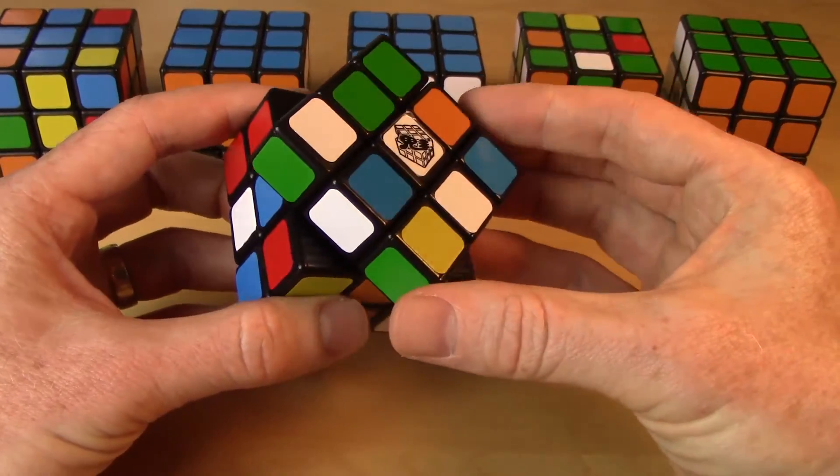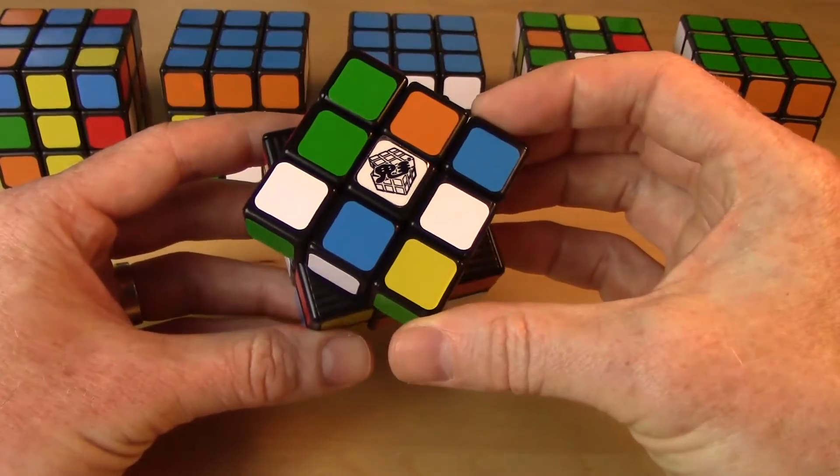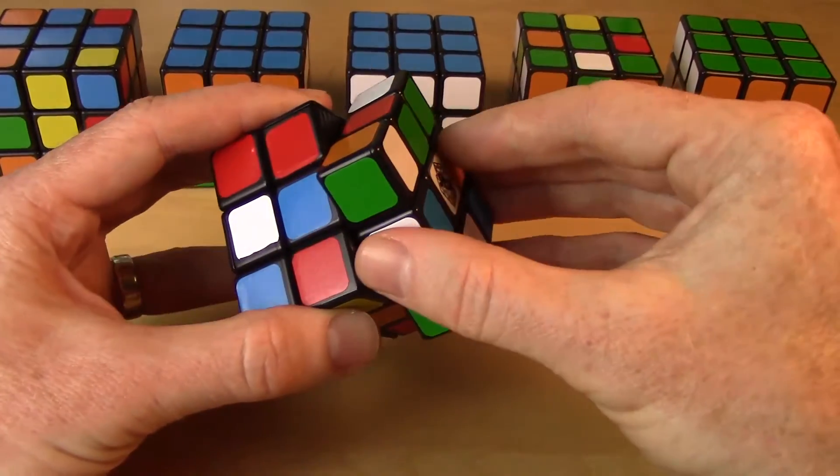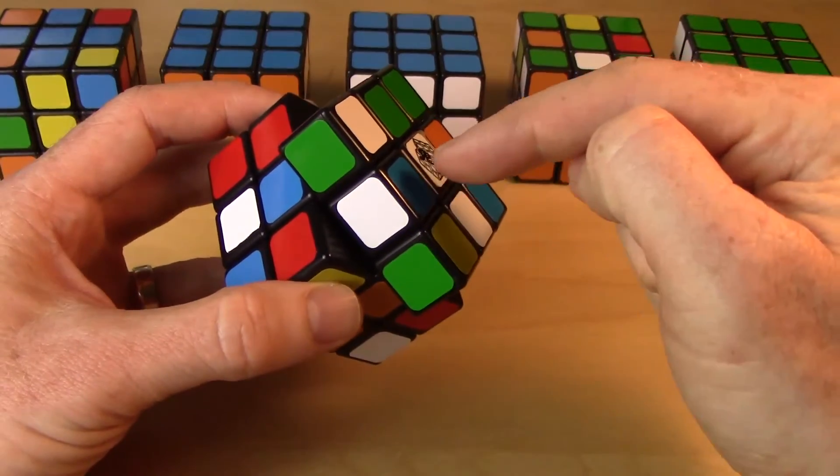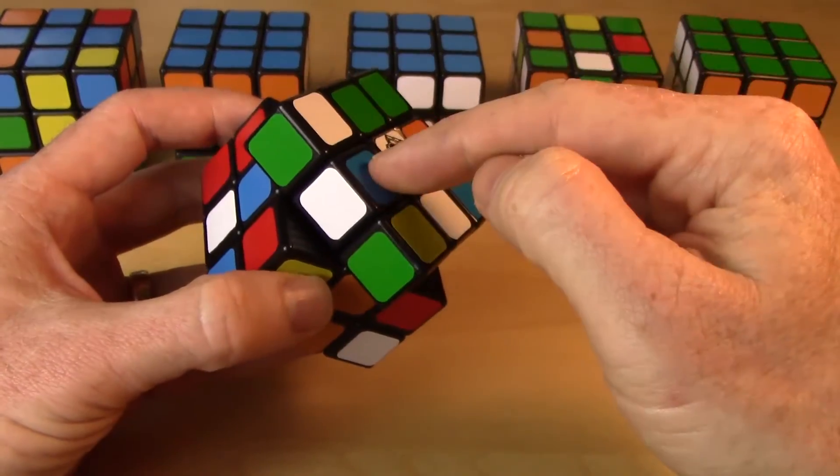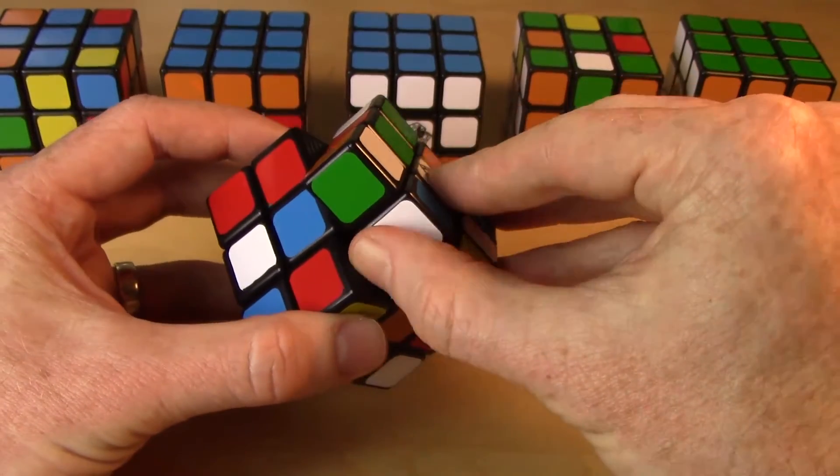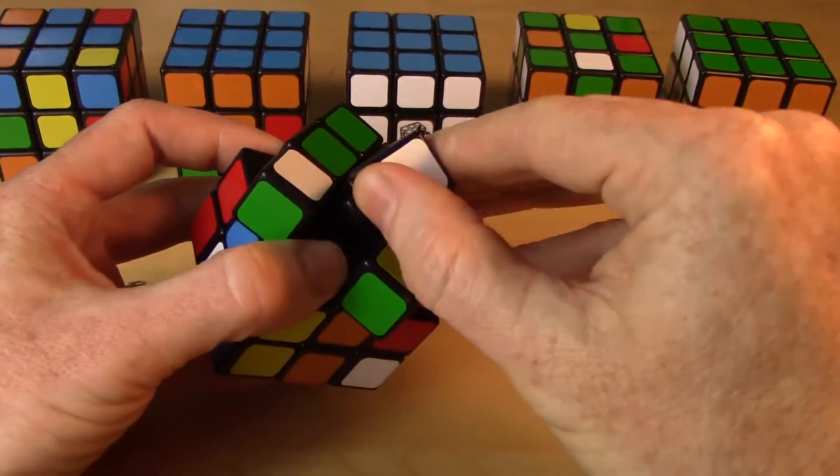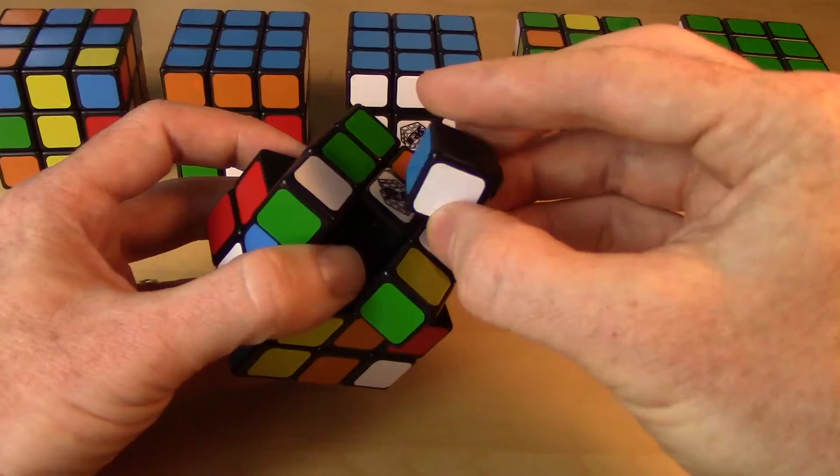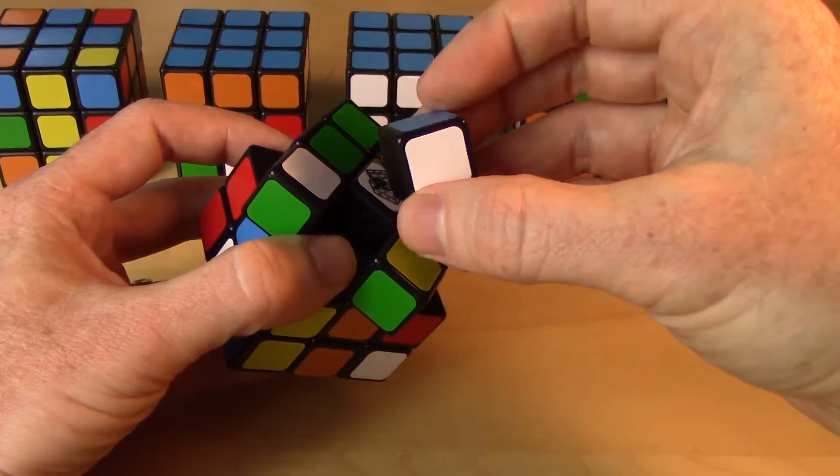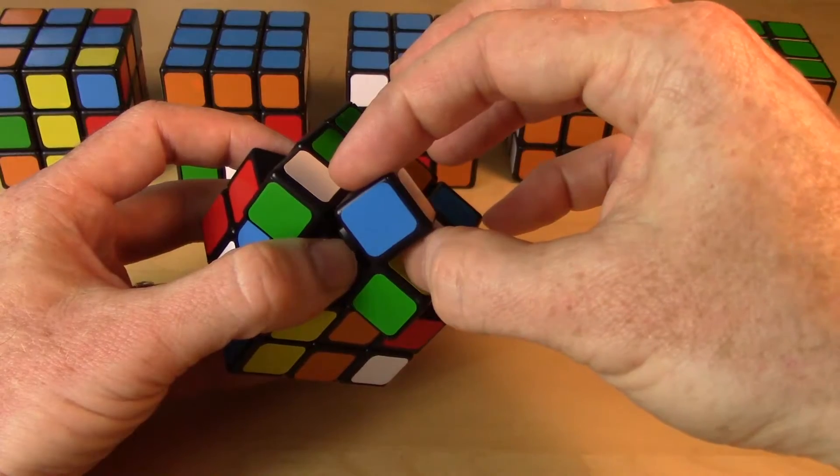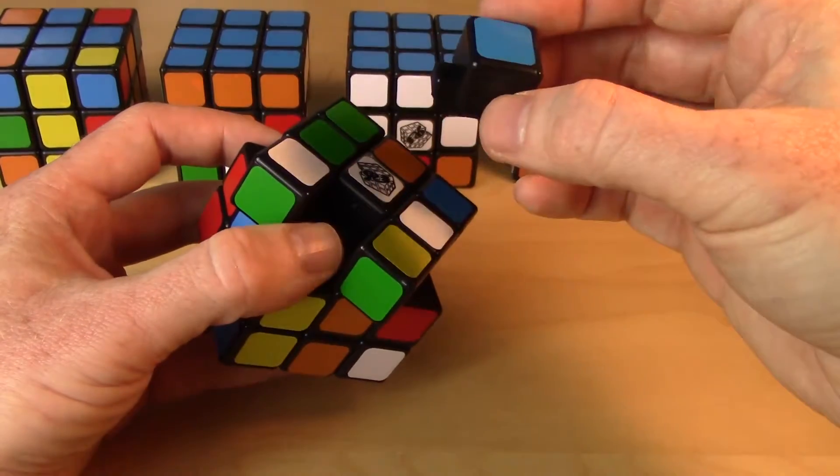So the first thing to do is realize that you can take this thing apart. Turn one of the faces 45 degrees, jam a thumb under the edge. Before you pop it out though, make a note of what color is on top and what color's on the side - blue on the top, white on the side - because when I pop it out there are two possible ways to stick it back in. And one of those ways, if I put it in upside down, it'll result in a cube that can't be solved.